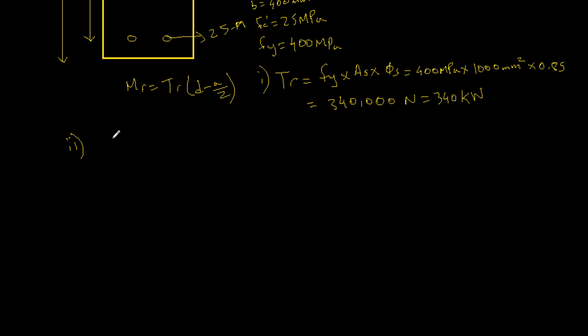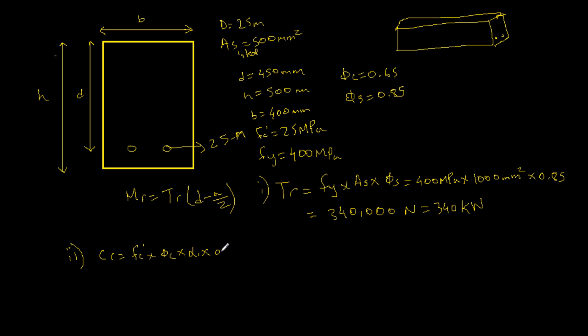Now a is in the compression equation or the compression force equation, so we have Cr equals fc prime times phi c times alpha 1 times area, which is a times b. See, we have our a here times b. This is our compression force, and we want to find a.